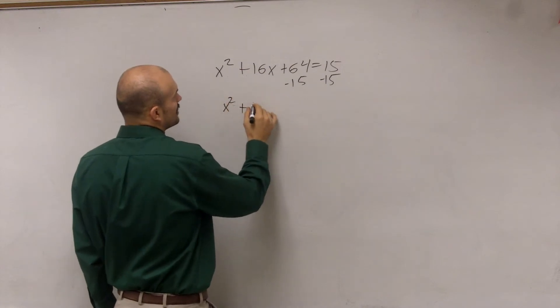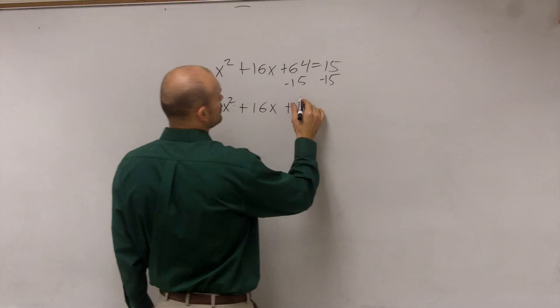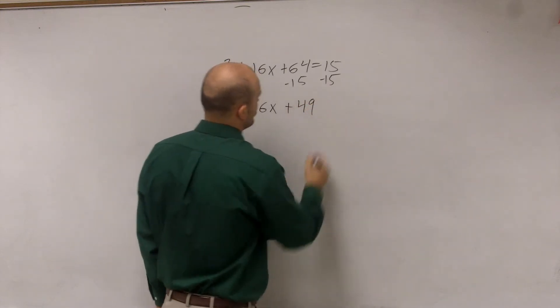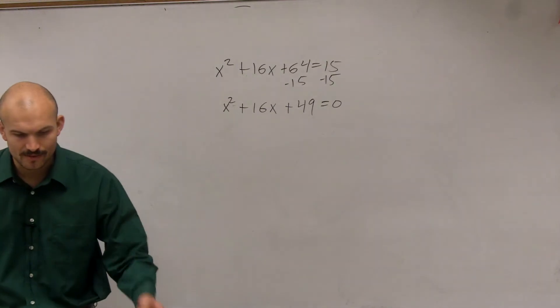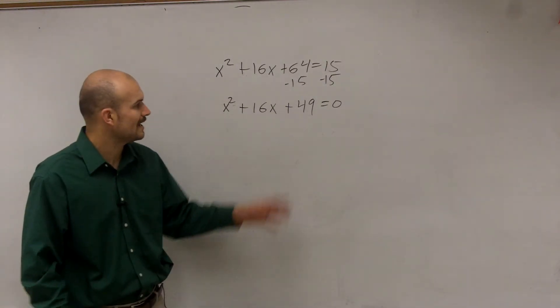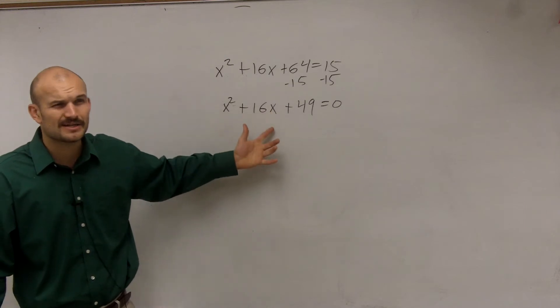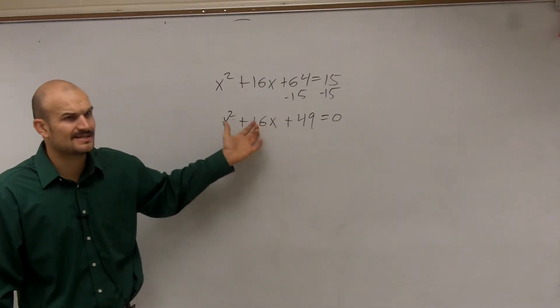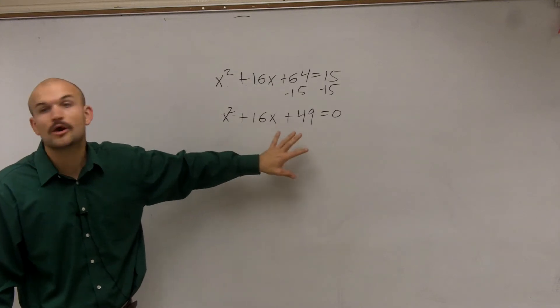So if I was to do that, all right, I'd get x squared plus 16x plus, let's see, 49 equals 0, right? But then you need to determine what two numbers multiply to give you 49 but add to give you 16. And when you try to factor this, you realize that it's not factorable, right? You can't factor this in what we've learned.